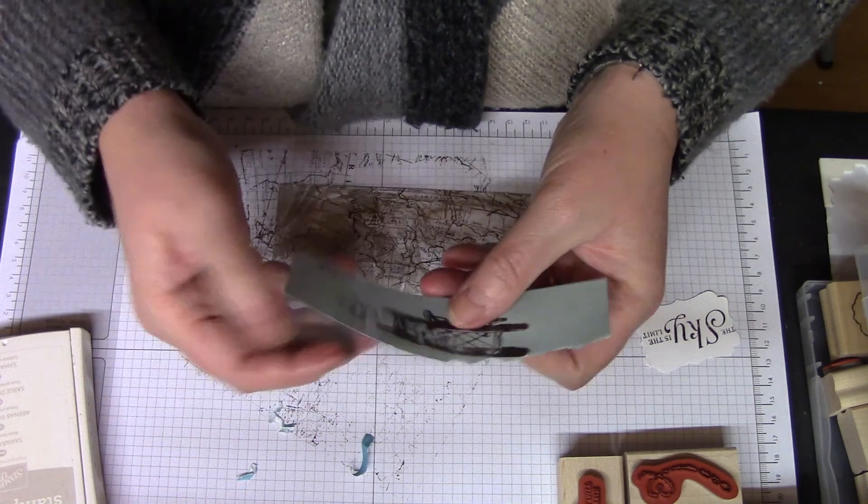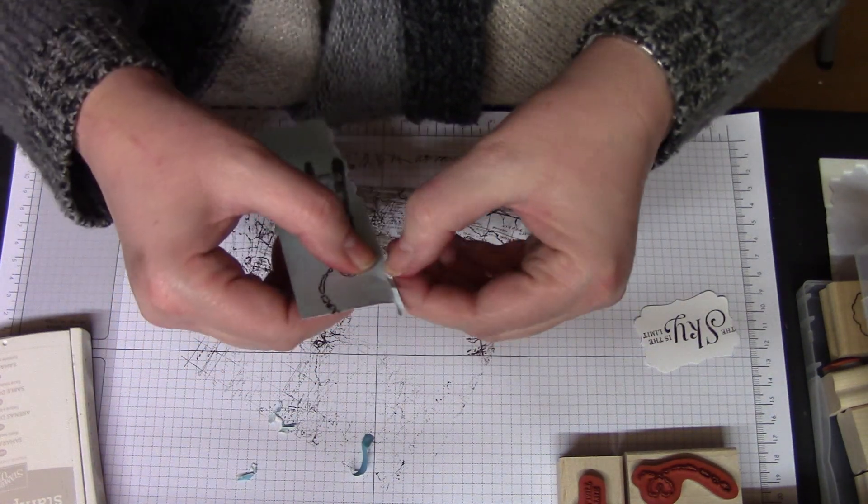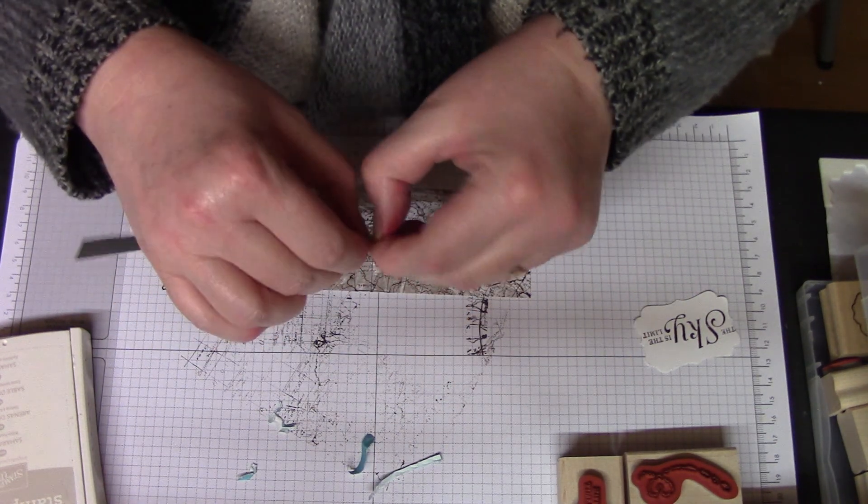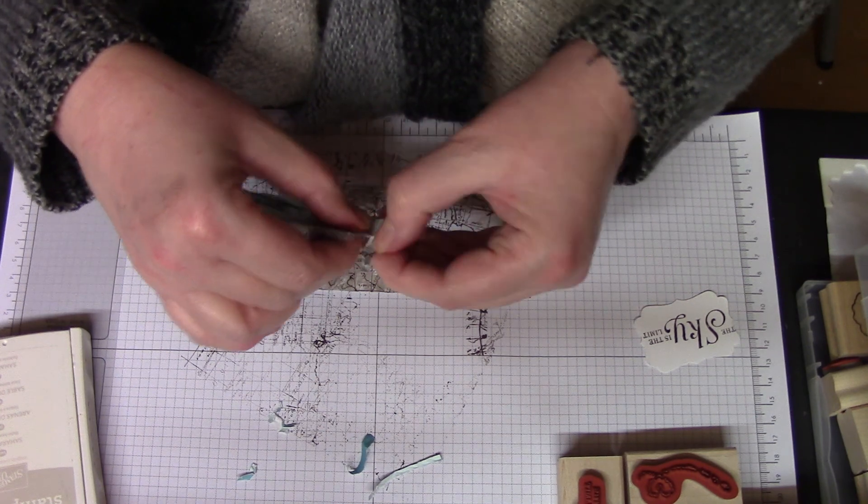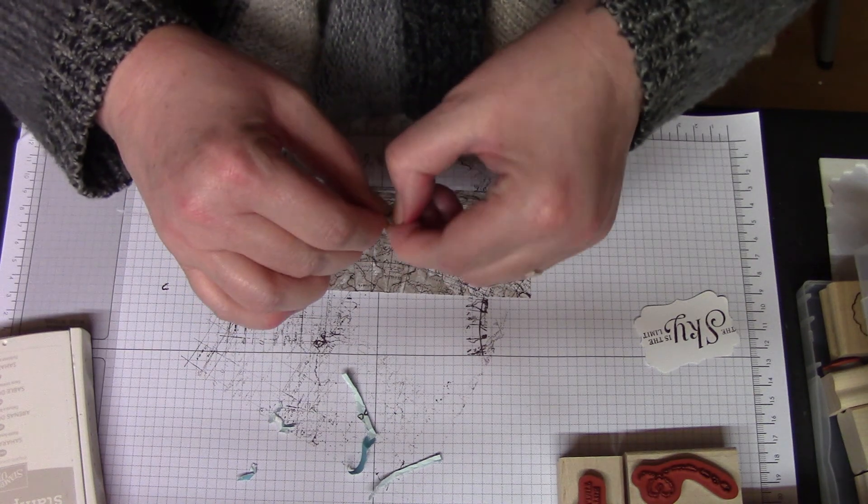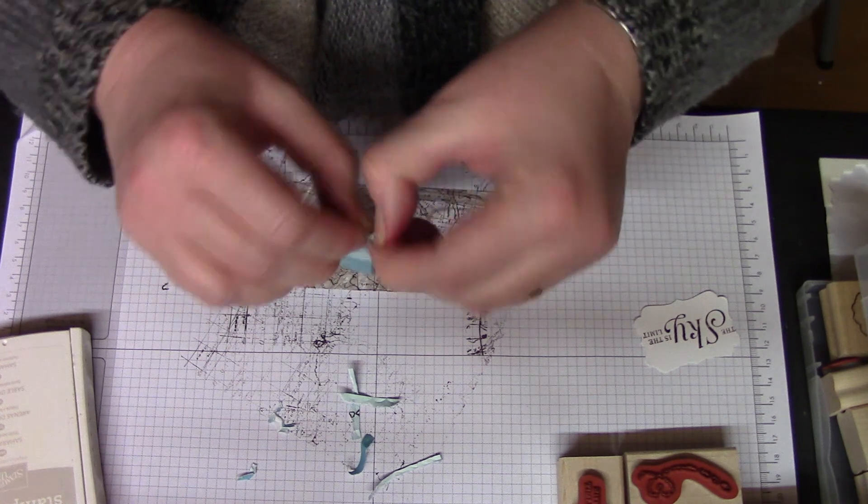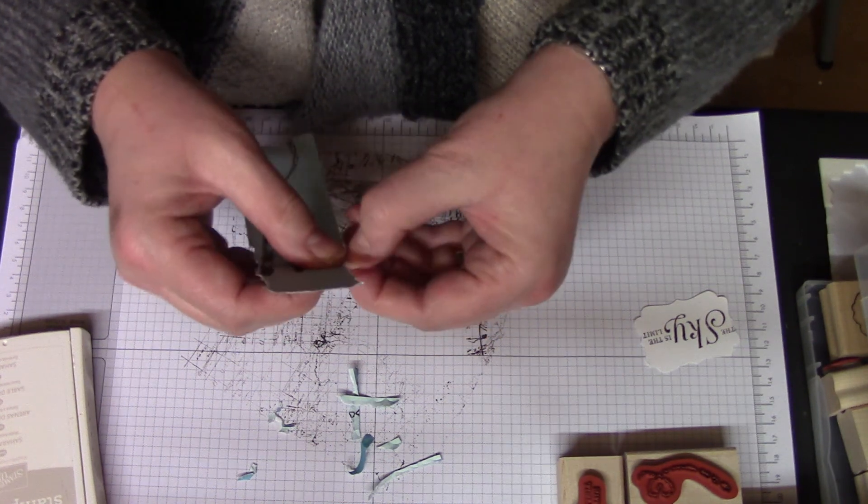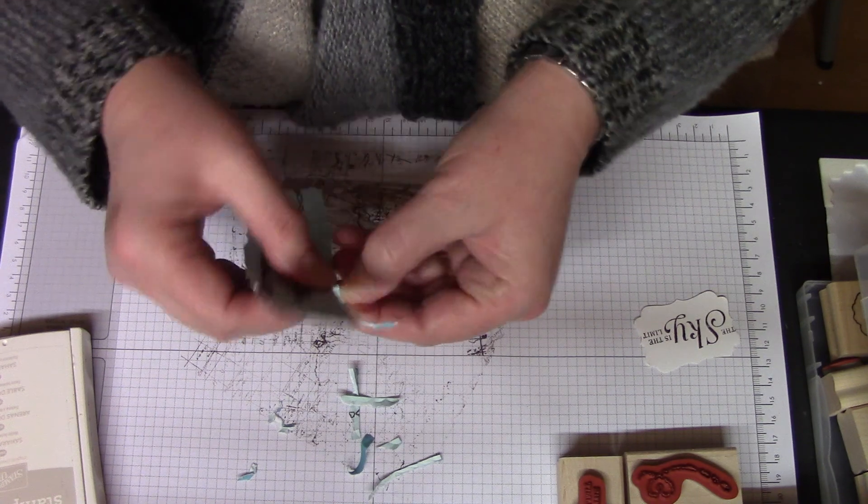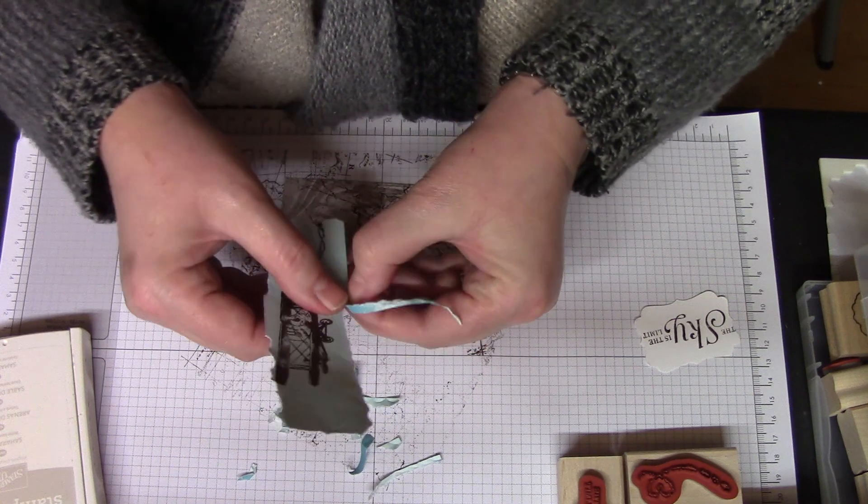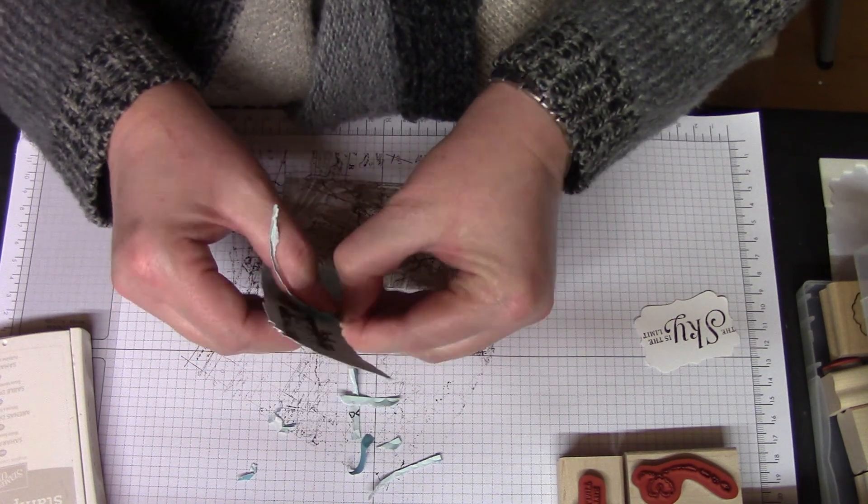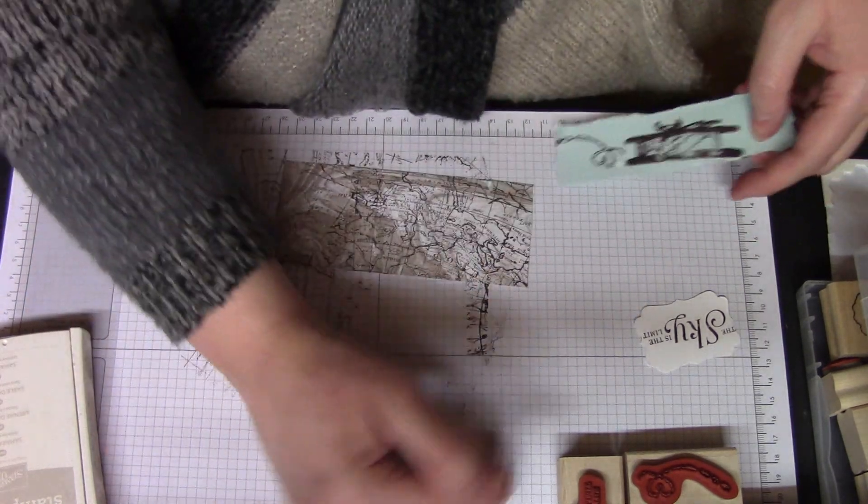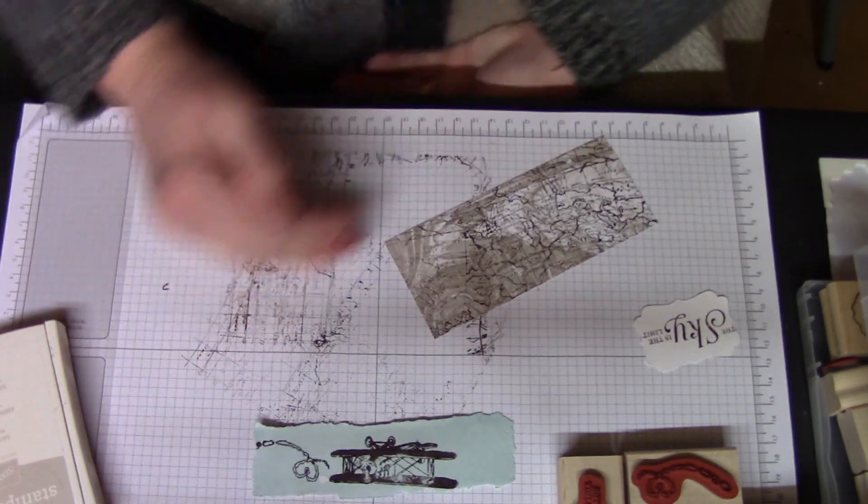Now we can bring in the Sahara Sand ink pad and we're going to tear just fairly gently. You don't want to rip too much off, but you just want to distress these edges. Take your time. You can use a distressing tool if you want. I feel my fingers work fine for me.